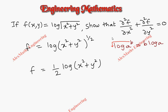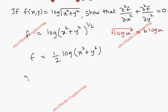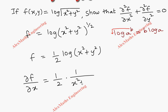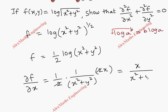Now we have the function f. First we have to find ∂f/∂x, the partial derivative with respect to x where y is treated as a constant. Half is written as it is, the differentiation of log gives 1/(x²+y²), then using the chain rule we differentiate the inner term to get 2x, and y is a constant so its derivative is zero. Cancelling the 2s, we are left with x/(x²+y²).